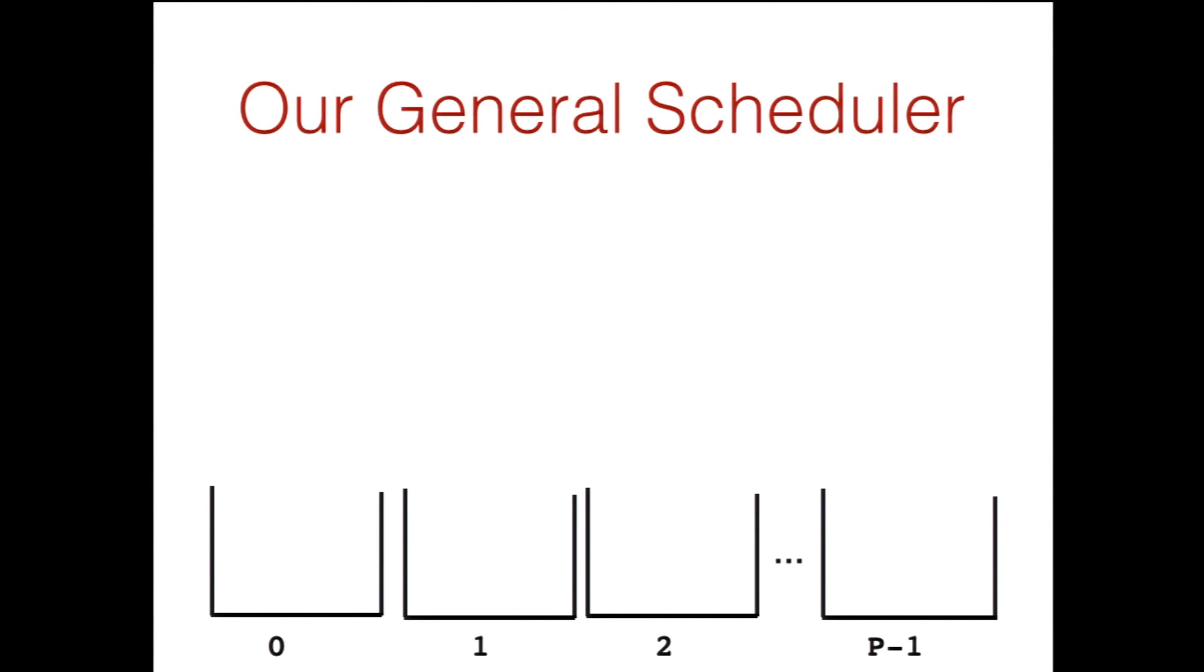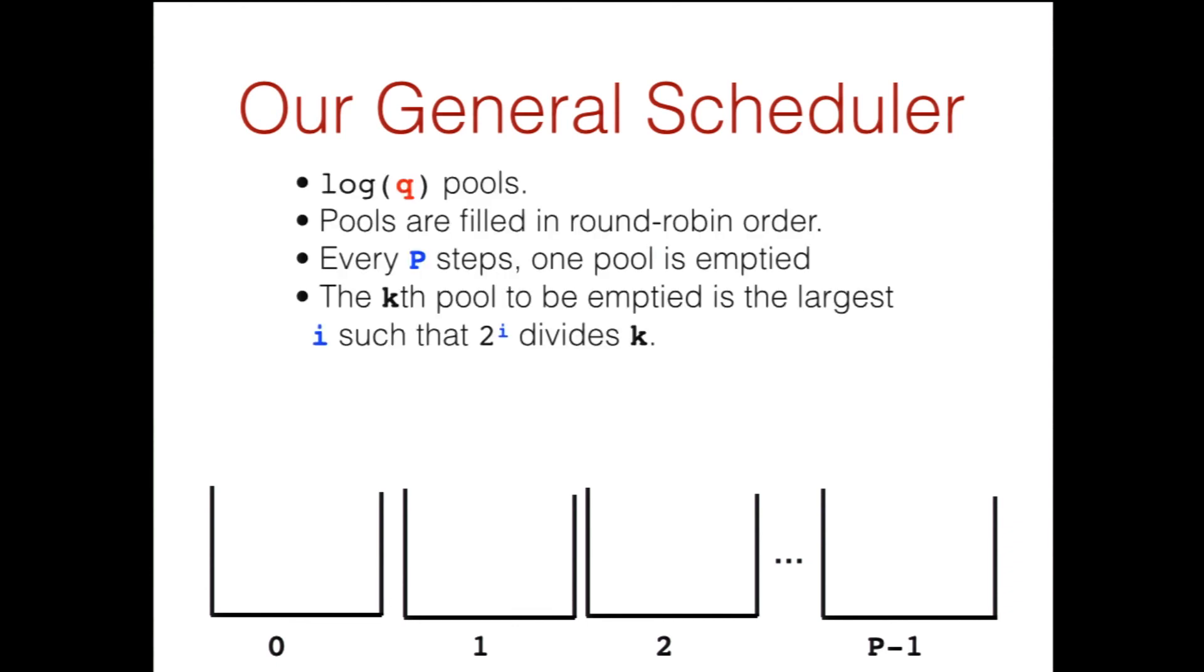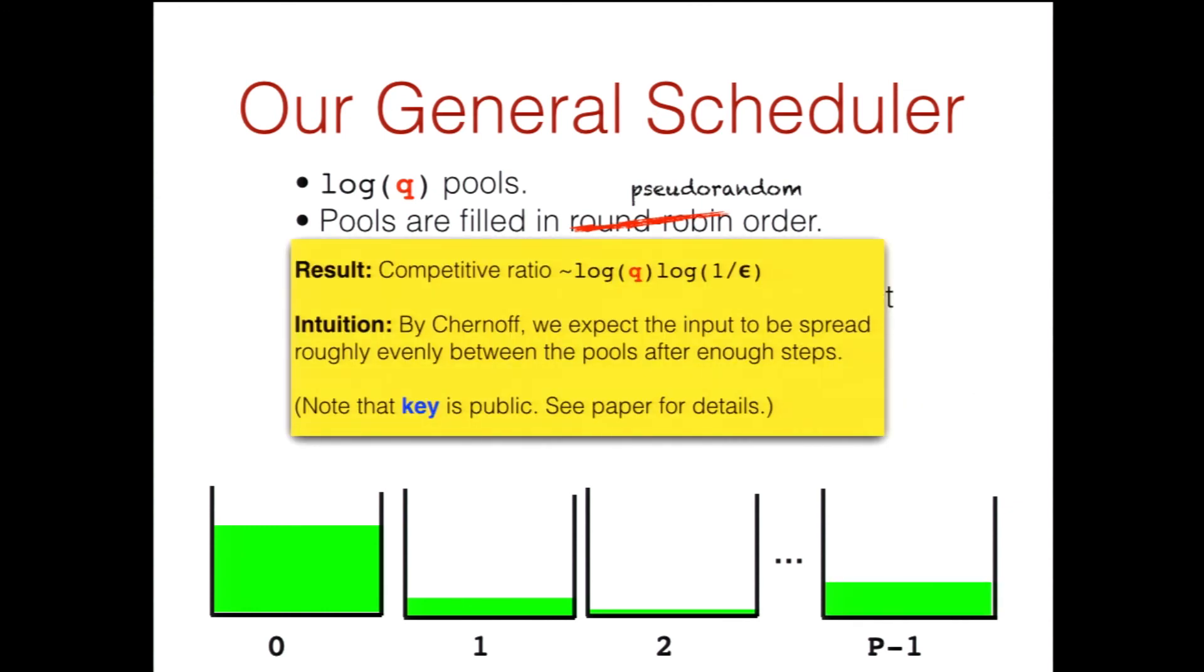Now let me show you our general scheduler, which works in the general case regardless of the weight sequence. So recall Fortuna. It had log Q pools. The pools were filled in round-robin order. One pool was emptied every P steps, and they were emptied in this powers of two sequence. We'll make only one modification. We're going to replace round-robin with pseudorandom. So what do I mean by that? We're going to take some PRF with some key, and we're going to evaluate it at one to decide which pool to be emptied first, evaluate it at two for the second pool, evaluate it at three for the third pool, et cetera. So I won't give you the full proof here. It's slightly involved. In particular, note that the key is public, so there are some subtleties here. But what we achieve is a log Q times log 1 over epsilon competitive ratio, where epsilon is the probability of failure. And the intuition behind this is just that by Chernoff, we expect the pools to be filled roughly evenly after sufficiently many steps, and then the proof goes through roughly like the proof of Fortuna.